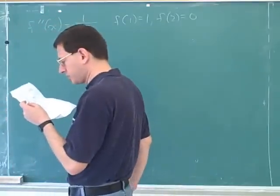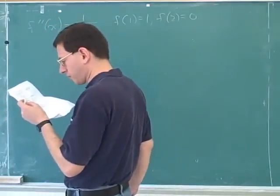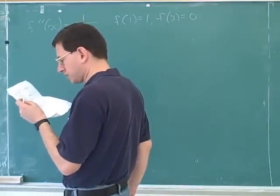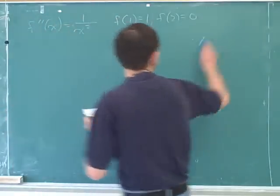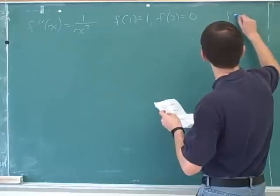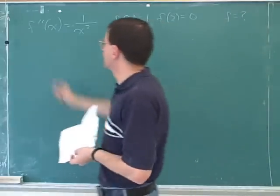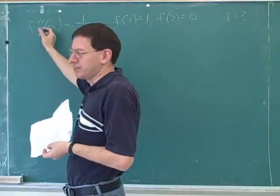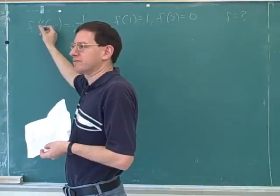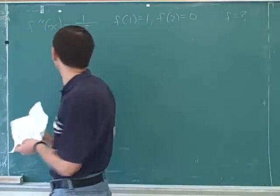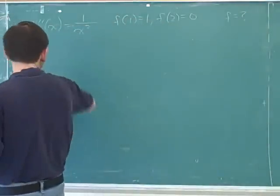So what was the question asking us for? It's asking us for f, which is the anti-derivative of the anti-derivative of this. So we have to take some anti-derivatives.